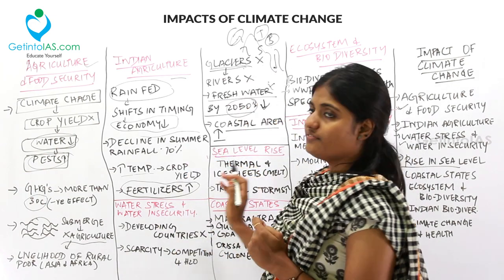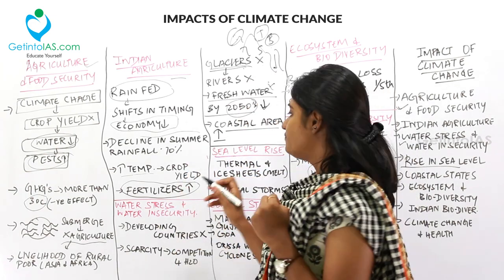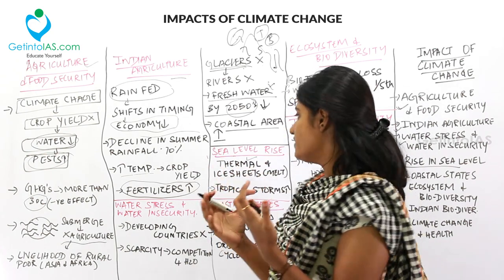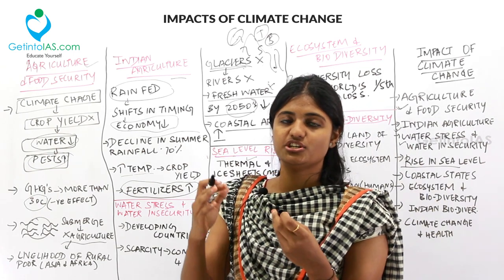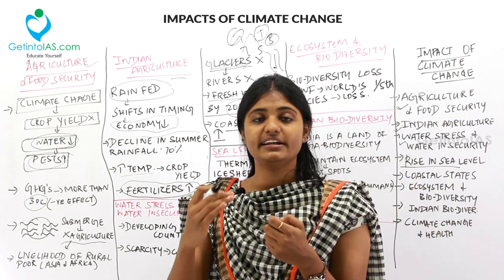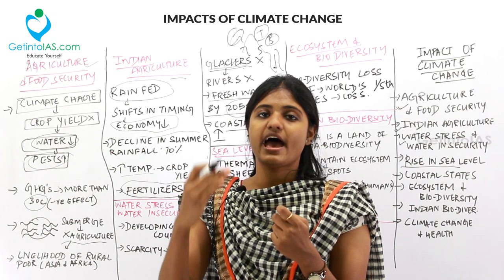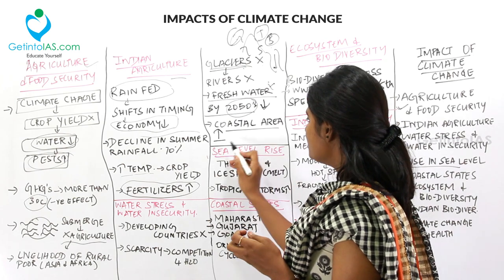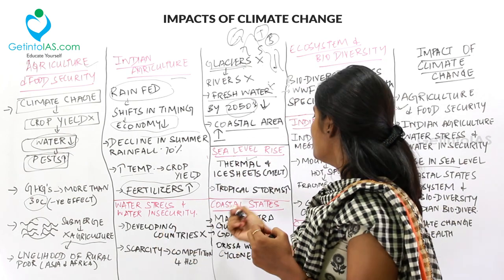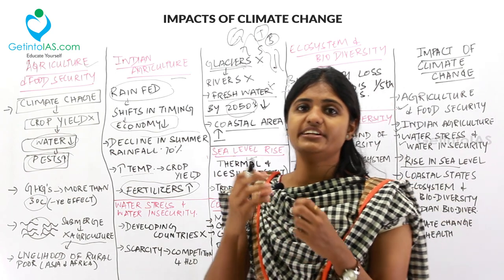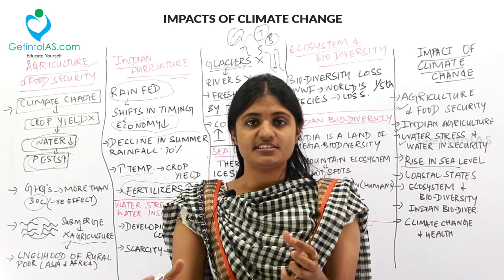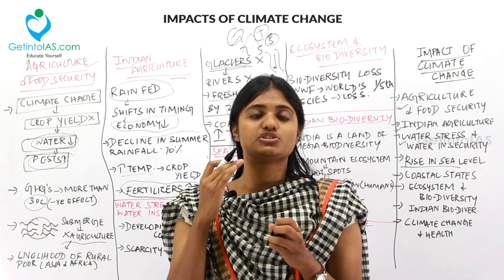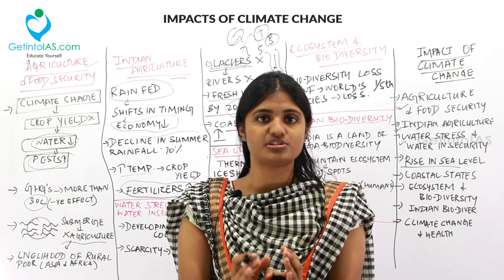Sea level rise has two causes. The first is thermal expansion due to global warming, and the second is the melting of ice sheets and glaciers, which raises the water level. Sea level rise also accompanies tropical storms — because of temperature variation between land and sea, tropical areas experience tropical storms, which are very harmful to coastal areas.